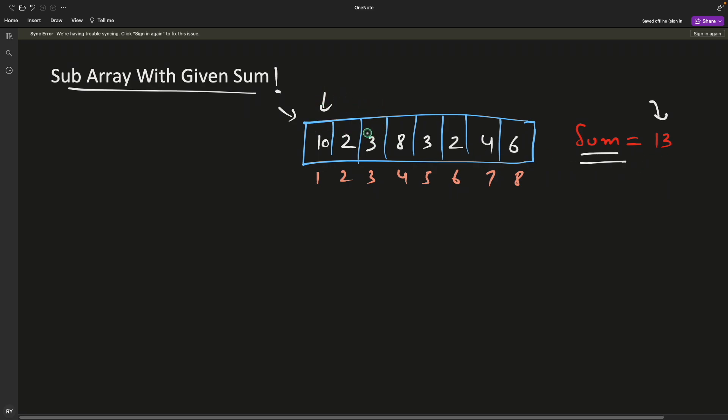Now there are many ways to do this. The first and very basic way is you just select the starting index and run for all the elements and just try to see where you are getting that number. Once you exceed that number, obviously you just break that inner loop and then you increment this counter further.